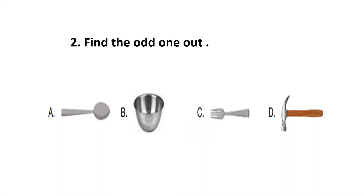Question number 2. Find the odd one out. The answer is option B, as this bowl does not have any handle, while options A, C and D have handles.